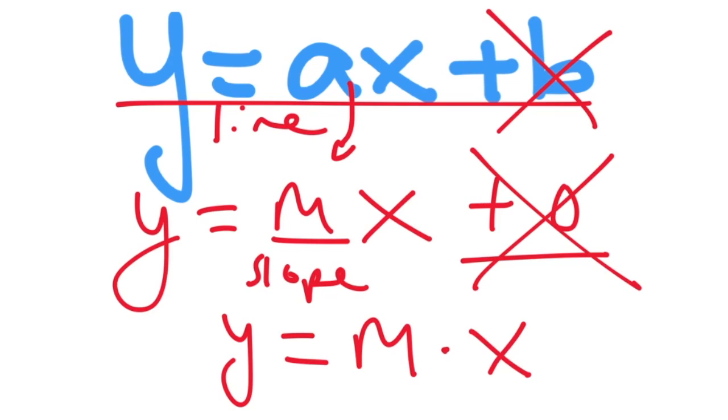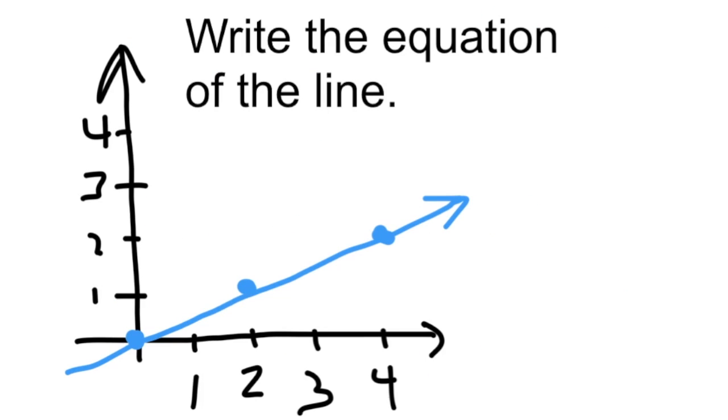Let's look at an example. Write the equation of the line. We see it's a special kind of line. It goes through the origin. That means it's a proportional relationship, meaning that the equation for the line is Y is equal to M times X. And M always means the slope.